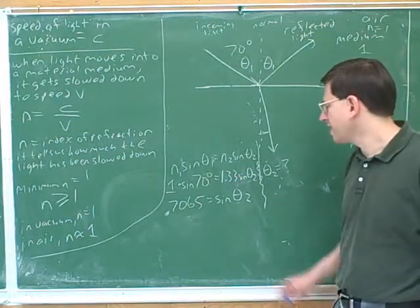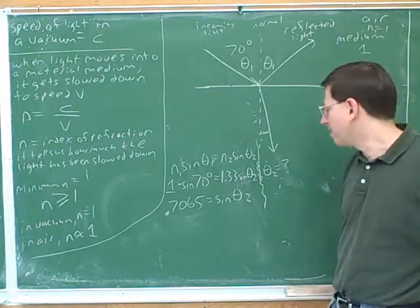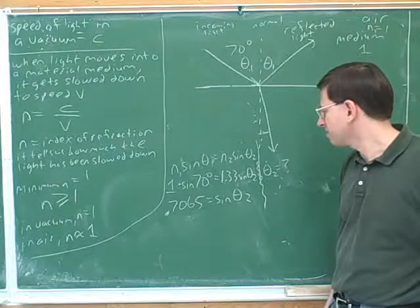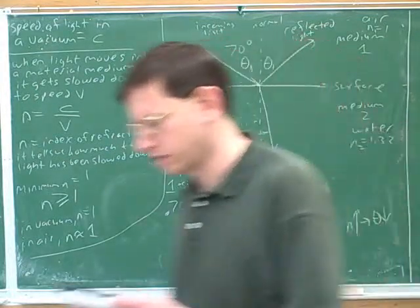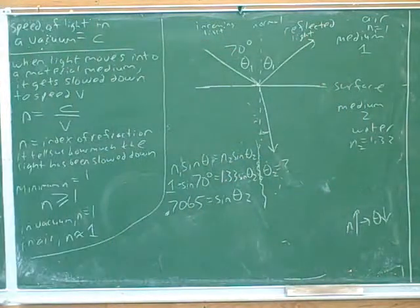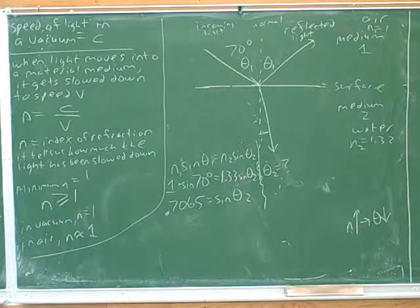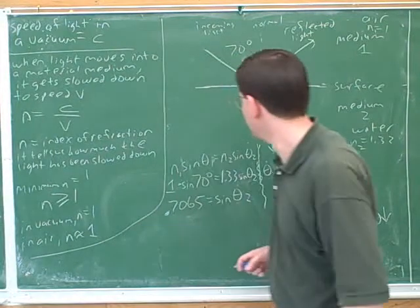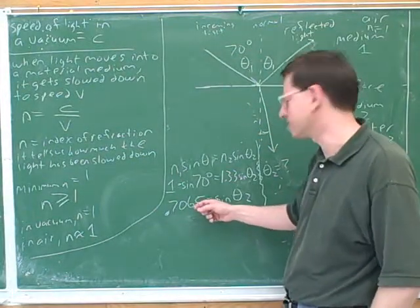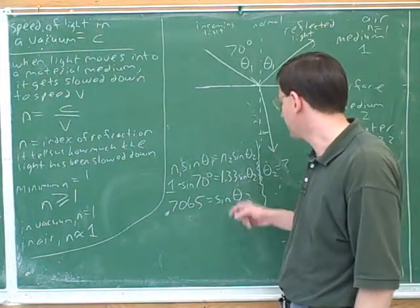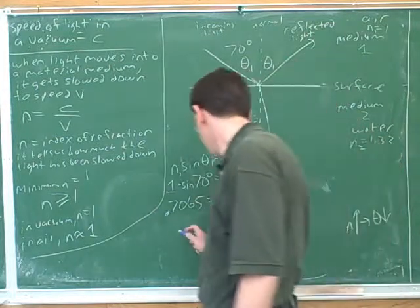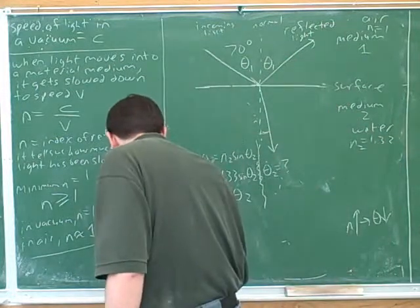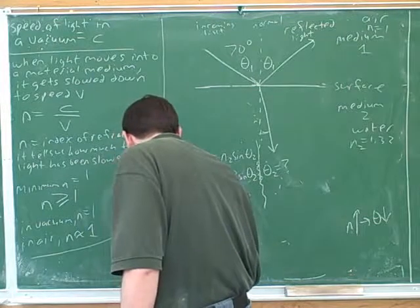All right, but we still have to figure out what theta 2 is. We'll have to do a little bit more algebra. What's the next step — what do we have to do to get theta 2 by itself? Inverse sine? Good. We saw this when we were working on trigonometry at the beginning of the physics course. The way to figure out the angle is to do the inverse — we're going to take the arc sine or inverse sine.